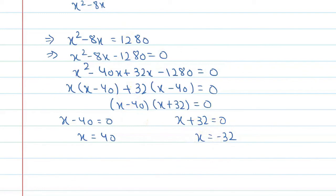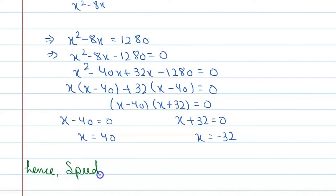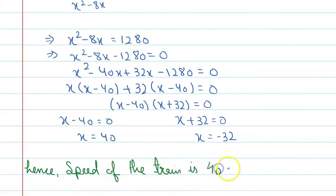Hence, the final answer: the usual speed of the train is 40 km/h. The negative value, minus 32, is rejected since speed cannot be negative.